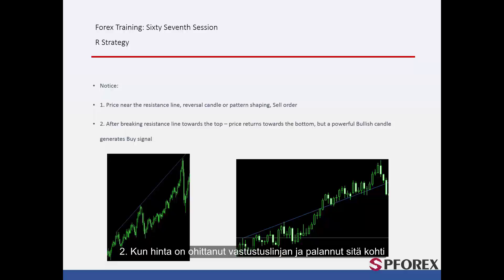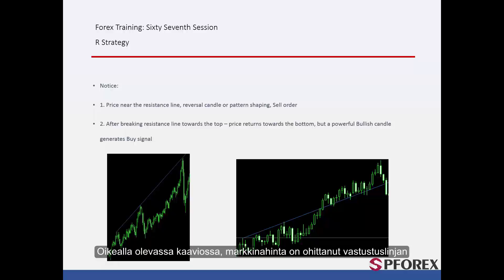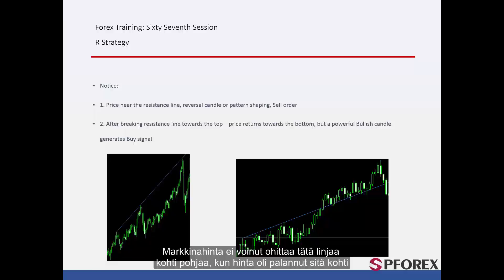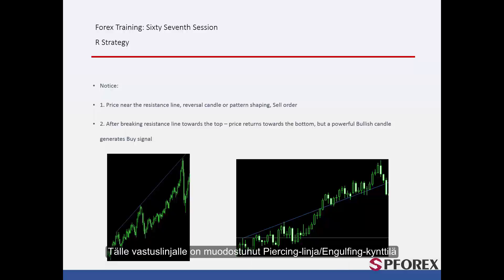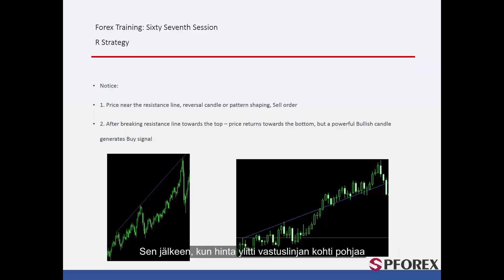After price passes the resistance line and returns towards it, if a powerful bullish candle forms on the resistance line, then a reliable buy signal will be generated. On the right graph, market price passed the resistance line but could not pass it towards the bottom after returning. A piercing line or engulfing candle formed on this resistance line, so a trader could place a buy order. After price crossed the resistance line towards the bottom, a trader could place a sell order lower than the bearish candle.